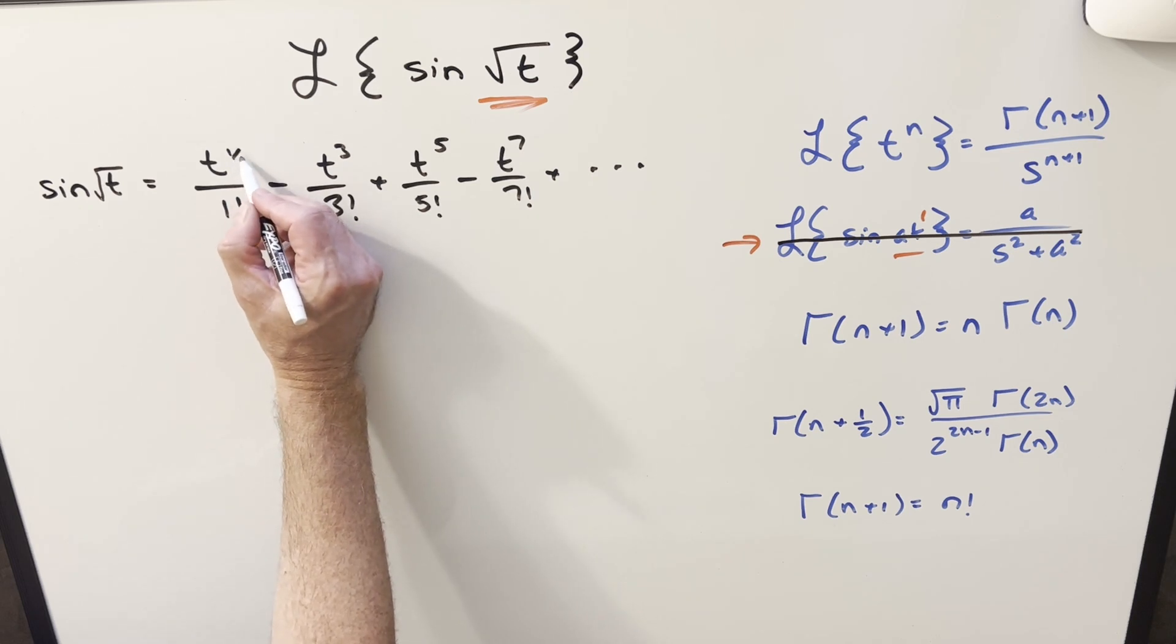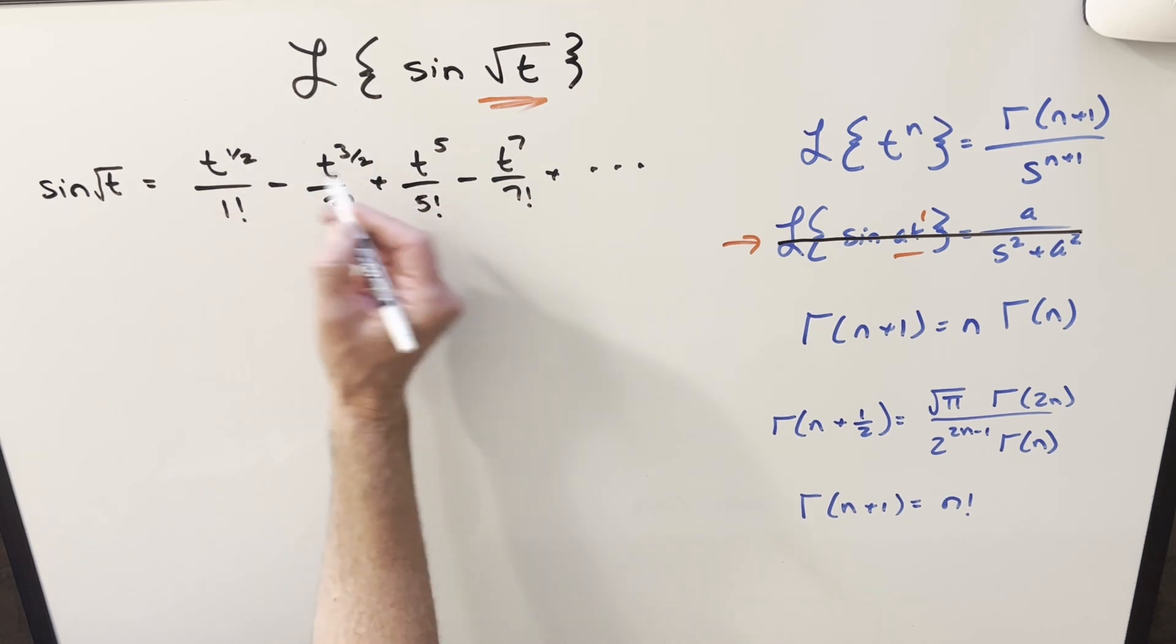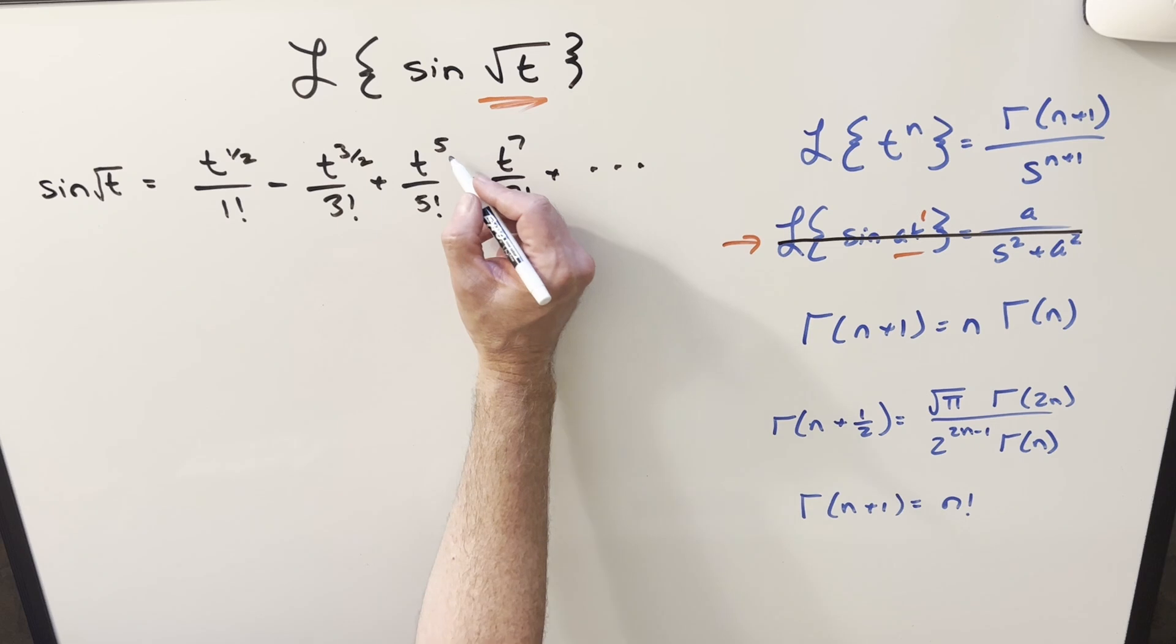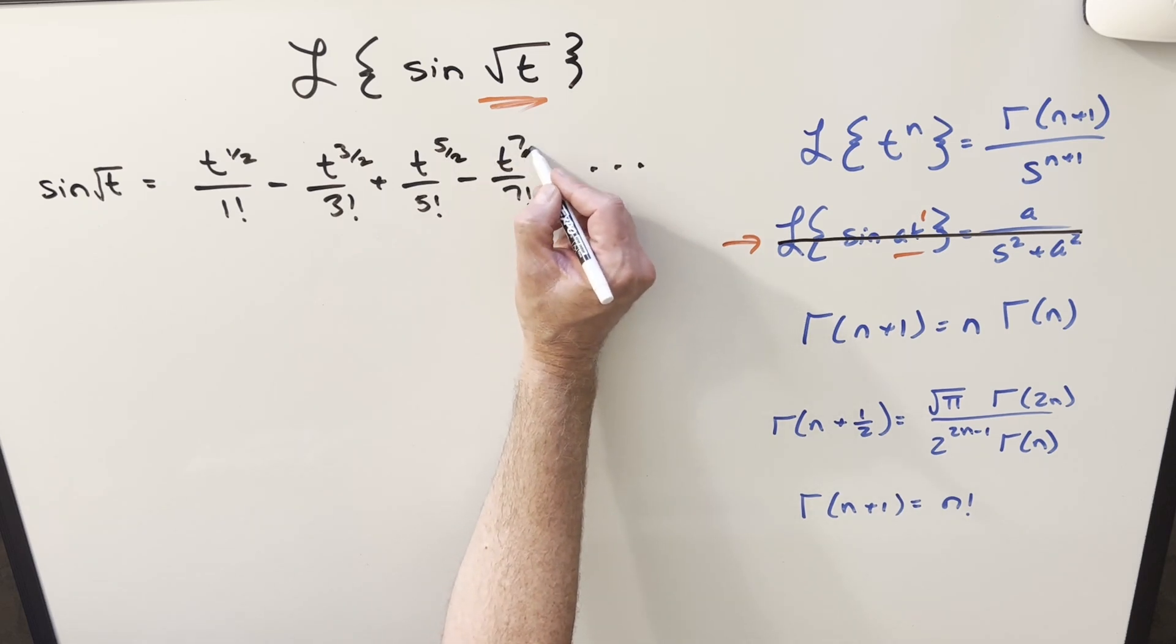When you do that, it's just going to change the exponent and everything. So instead of being 1, 3, 5, we're going to have 1 halves, 3 halves, 5 halves, 7 halves.